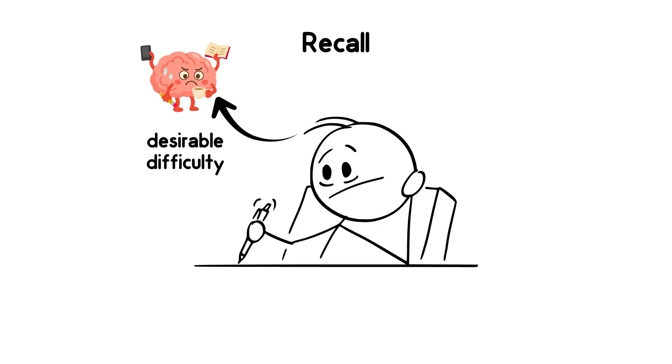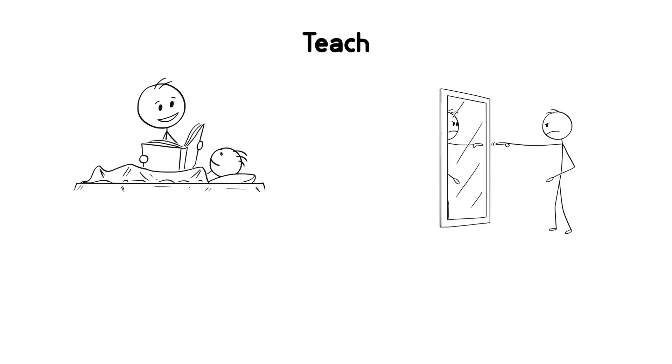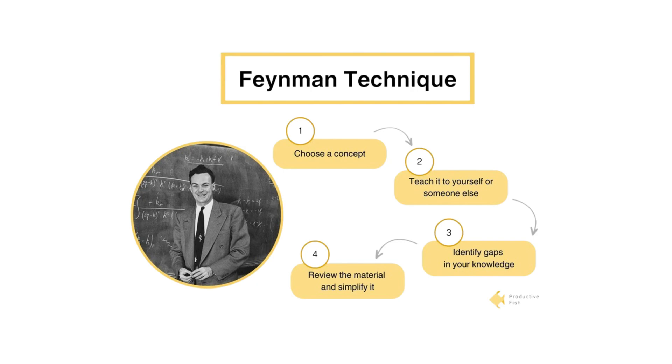Teach. Explain it to a friend, a mirror, or even your cat. When you teach, your brain divides information into logical chunks. In practice, this is called the Feynman technique.